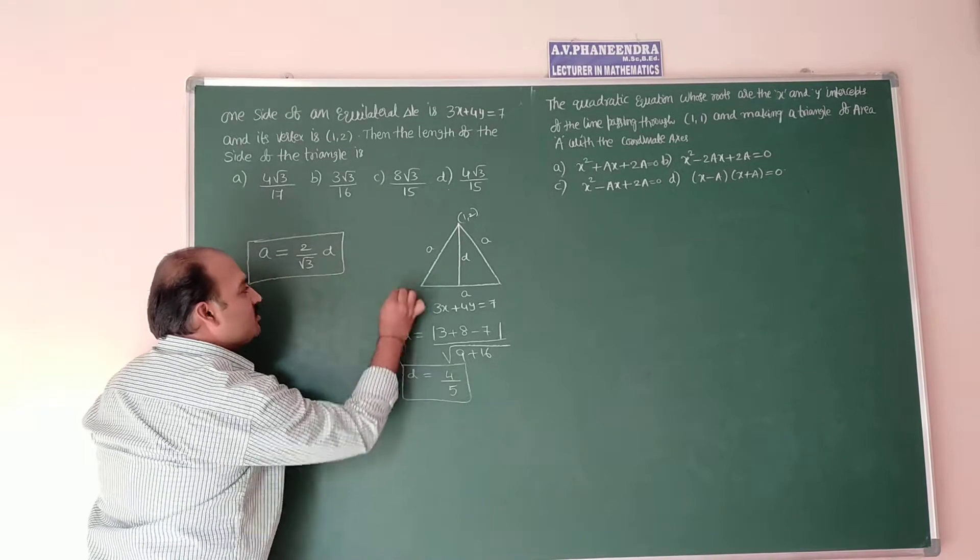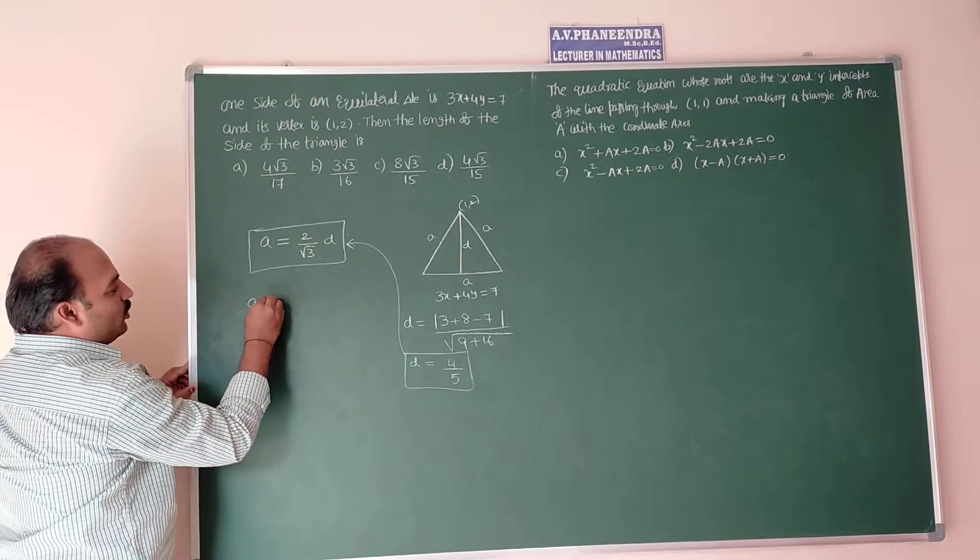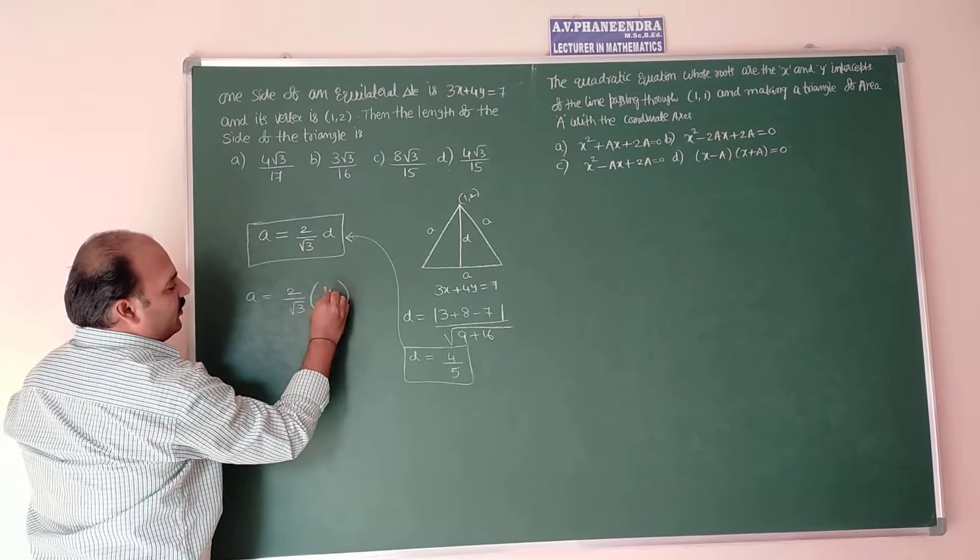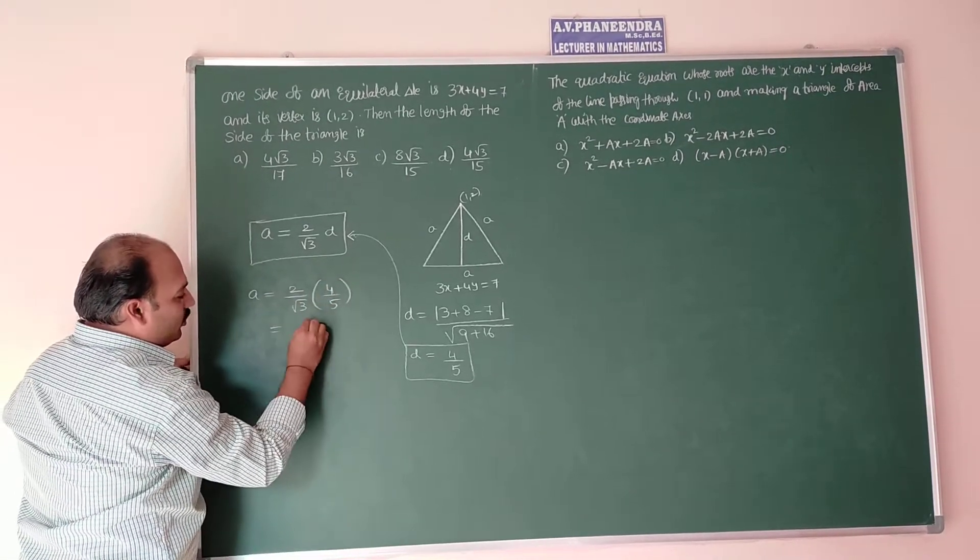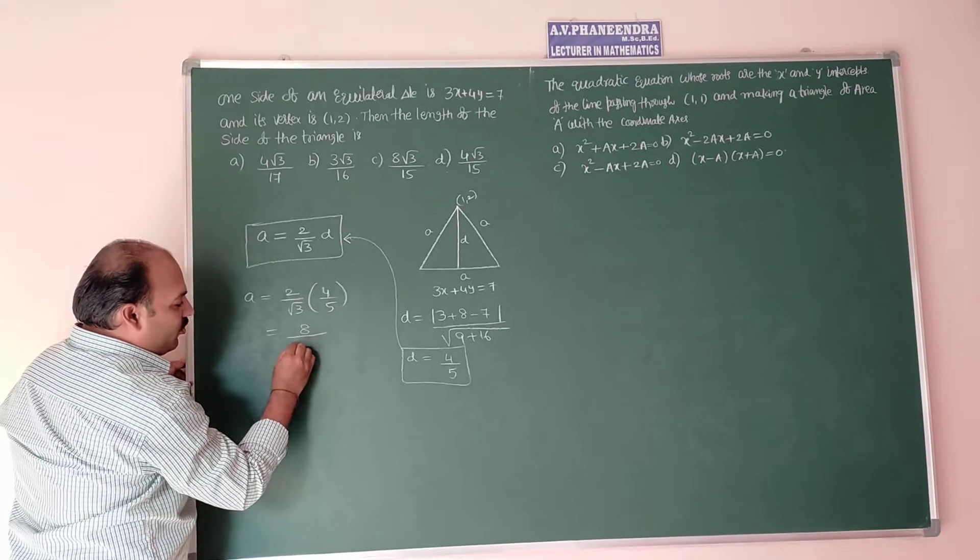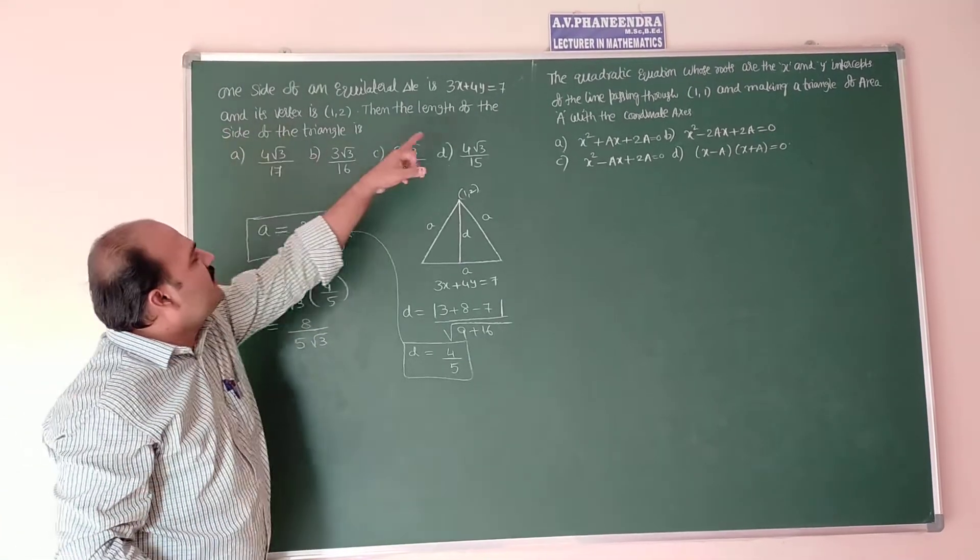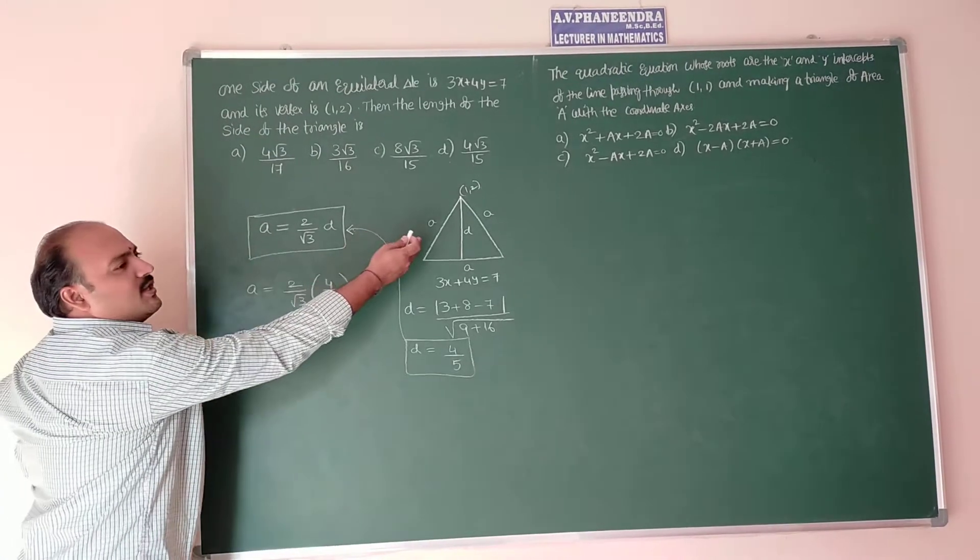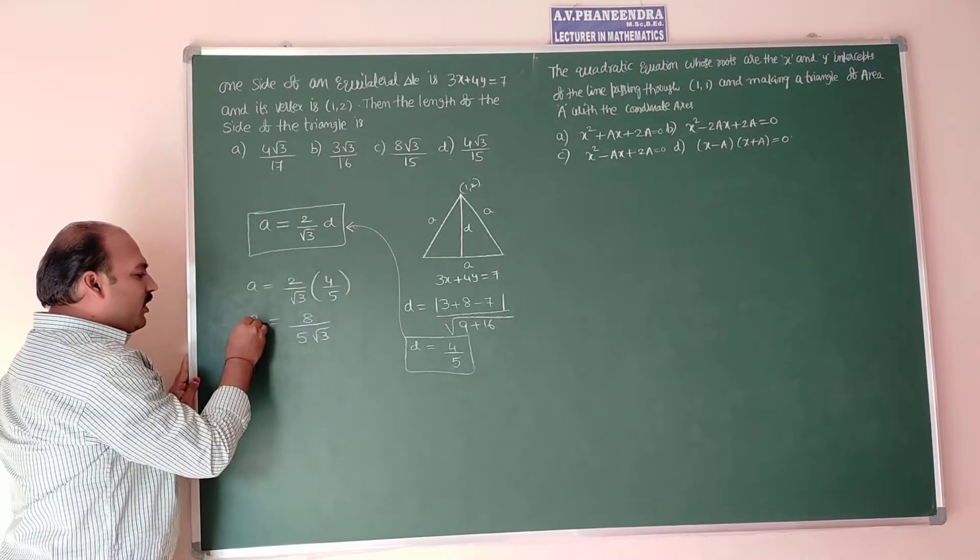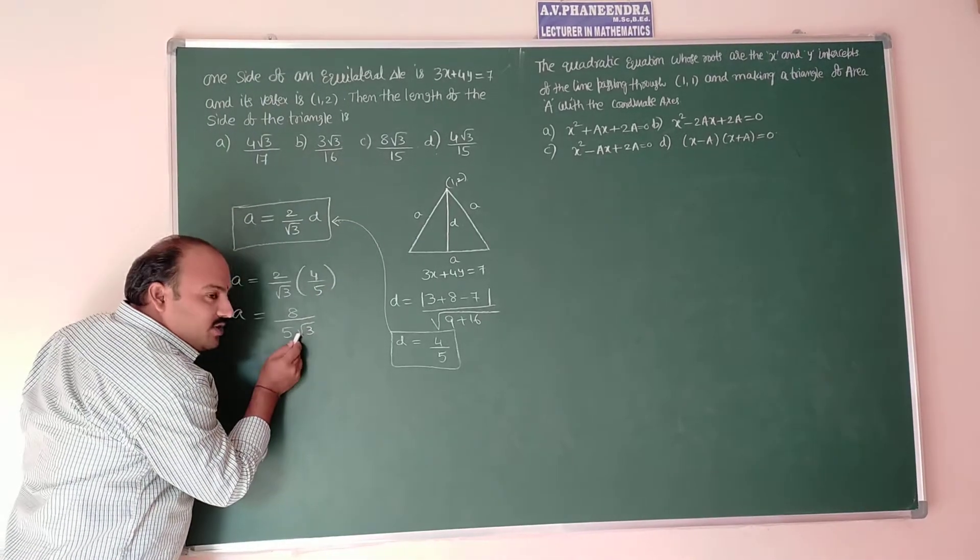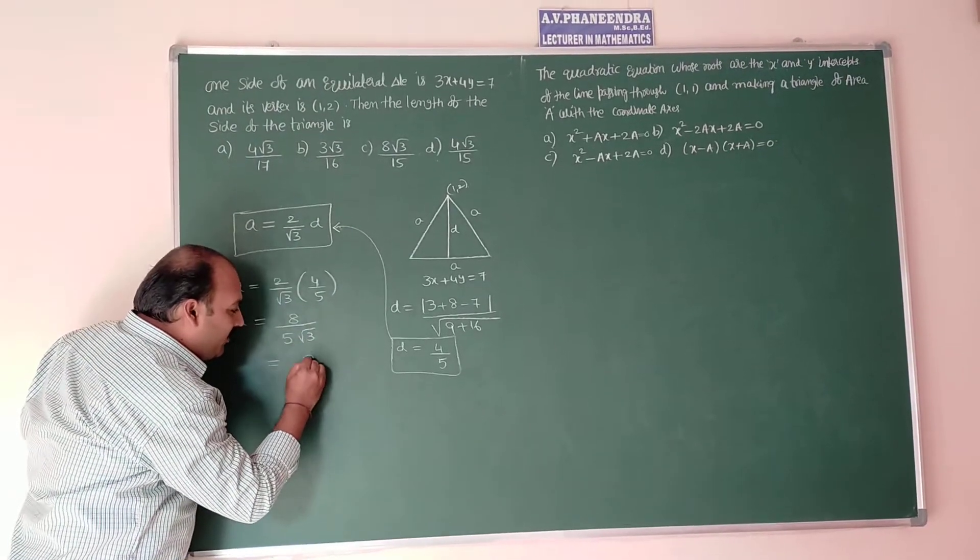Therefore D value substitute in this formula: A equal to 2 by root 3 into D value is 4 by 5, which is equal to 8 divided by 5 root 3. But this answer is not there, the length of the side of the equilateral triangle. But to get these answers, root 3 is there in the denominator, so multiplying and dividing by root 3.